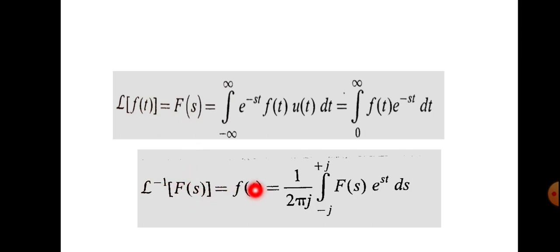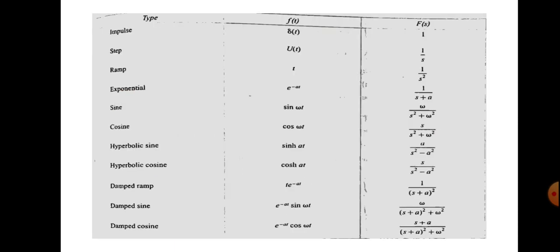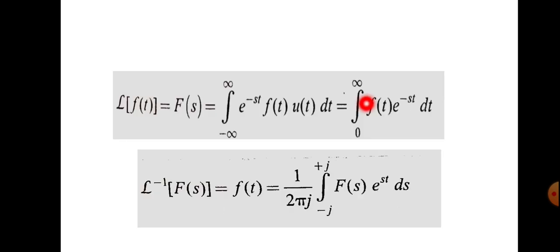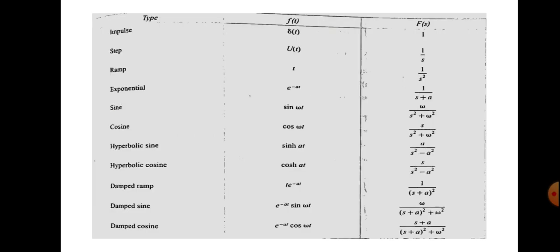Here is a table of Laplace transforms for standard signals. The impulse signal δ(t), appearing at t=0, has a Laplace transform equal to 1. This is obtained by substituting δ(t) into the integral, yielding F(s) = 1. Similarly, the Laplace transform of the unit step u(t) is 1/s.